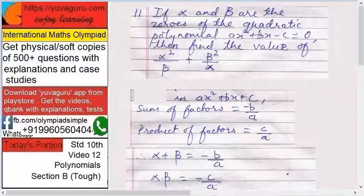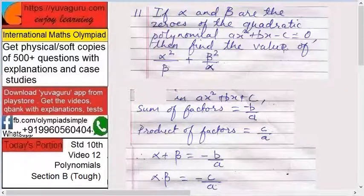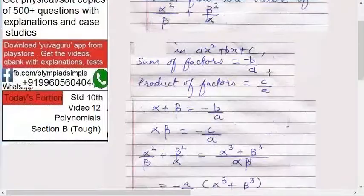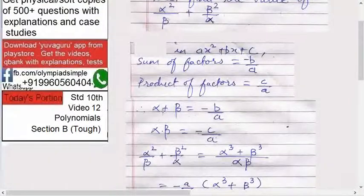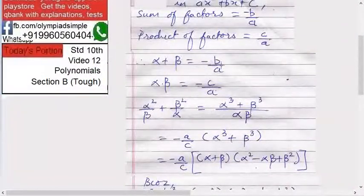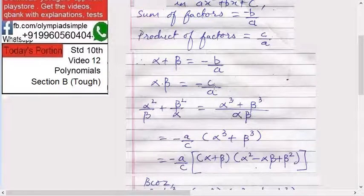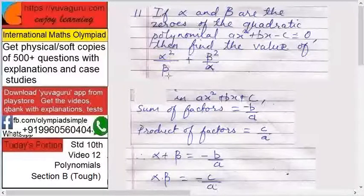In our case it will be -b/a, and instead of c/a it will be -c/a because c is minus here. So alpha + beta = -b/a and alpha × beta = -c/a.